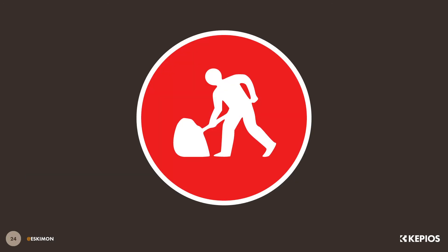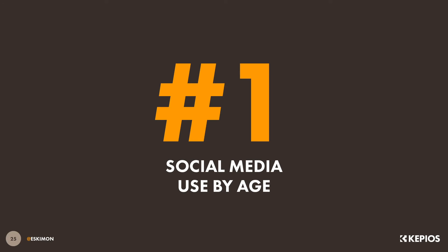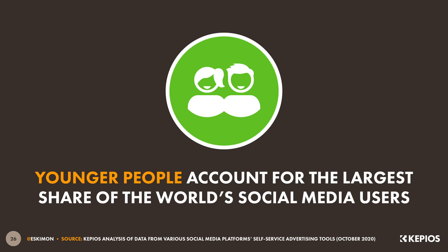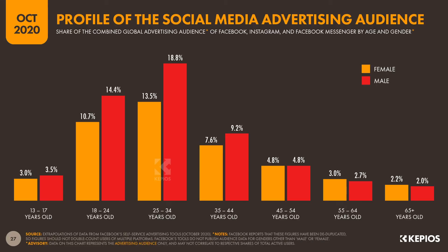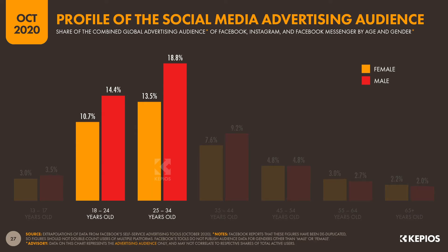With that hypothesis in mind, let's dig a bit deeper into the data to see what it might tell us, starting with a closer look at social media adoption by age. And perhaps unsurprisingly, the simplest finding is that younger people account for the largest share of social media users. Combined, deduplicated advertising audience data for Facebook, Instagram and Facebook Messenger shows that people aged 18 to 34 account for more than half of these platforms' total users.